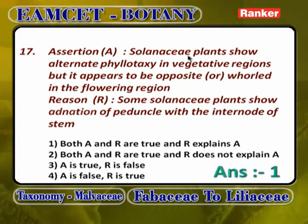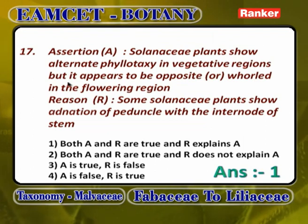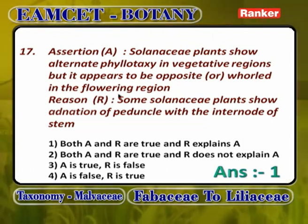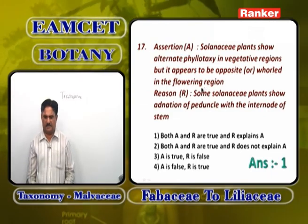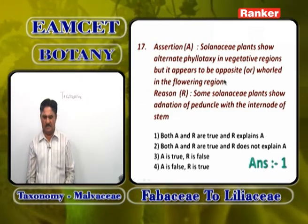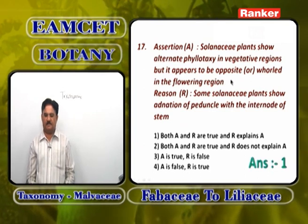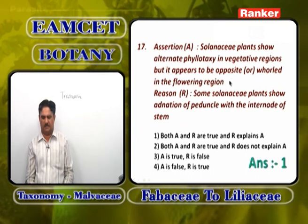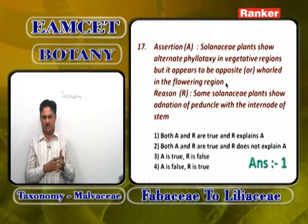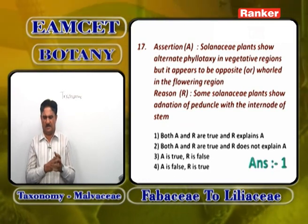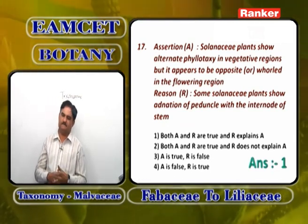Assertion: Solanaceae plants show alternate phyllotaxy in vegetative regions but appear opposite or whorled in flowering regions — correct. Reason: some plants of Solanaceae show adnation of peduncle with internode, and adnation of petiole with internode. So both A and R are correct, but R does not fully explain A. Answer is 2.